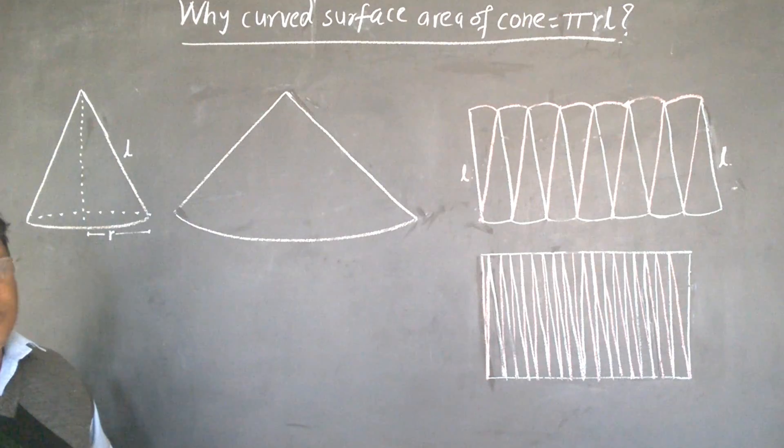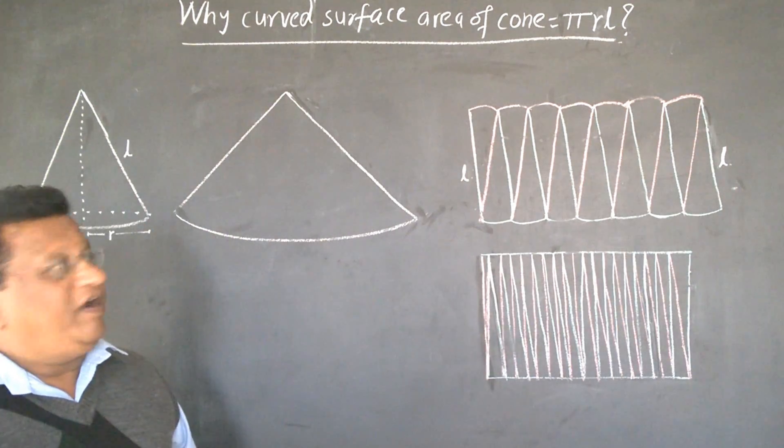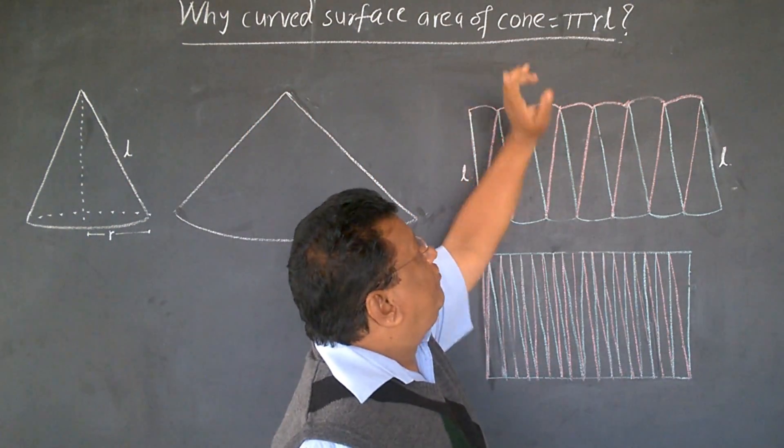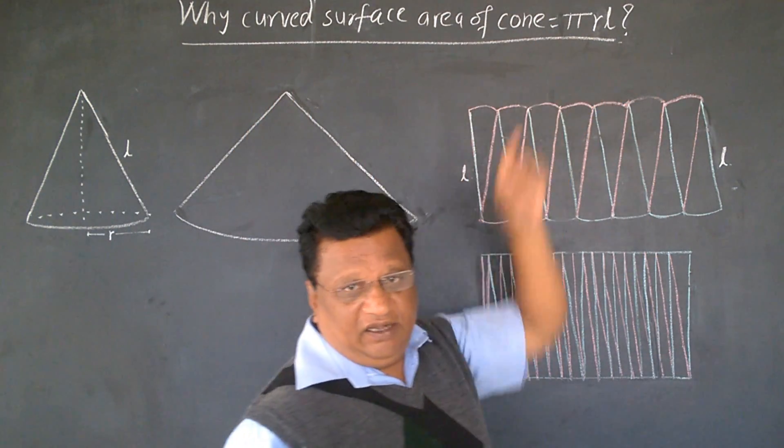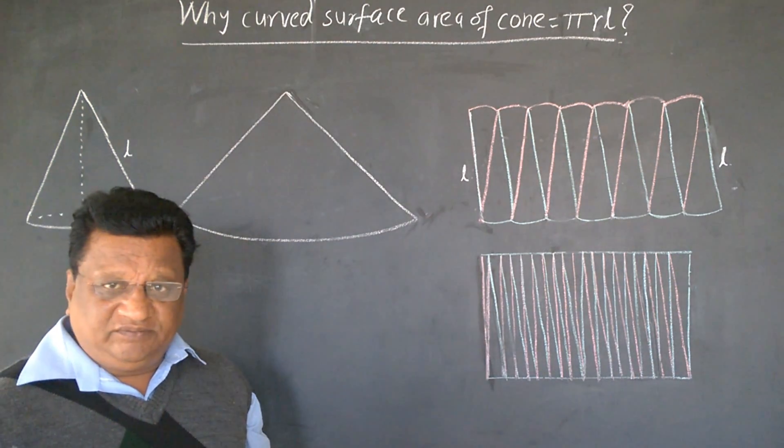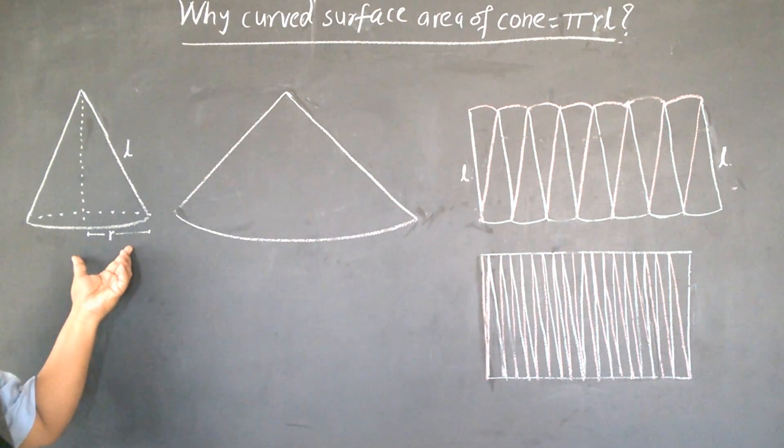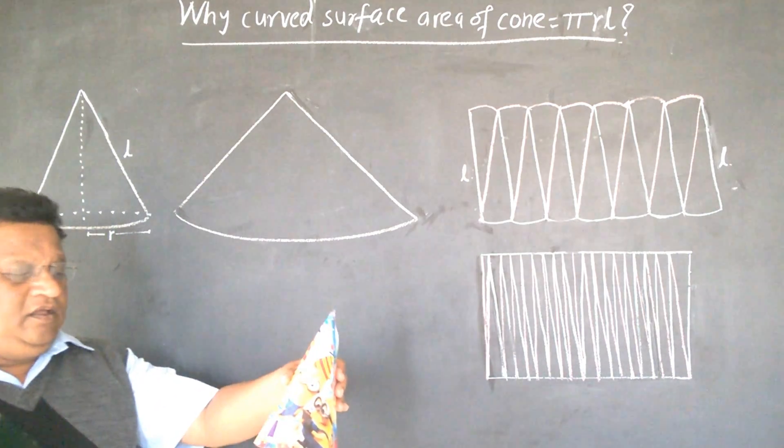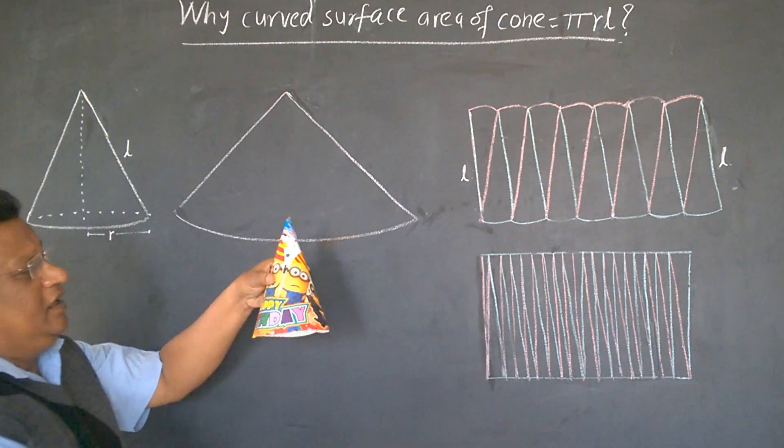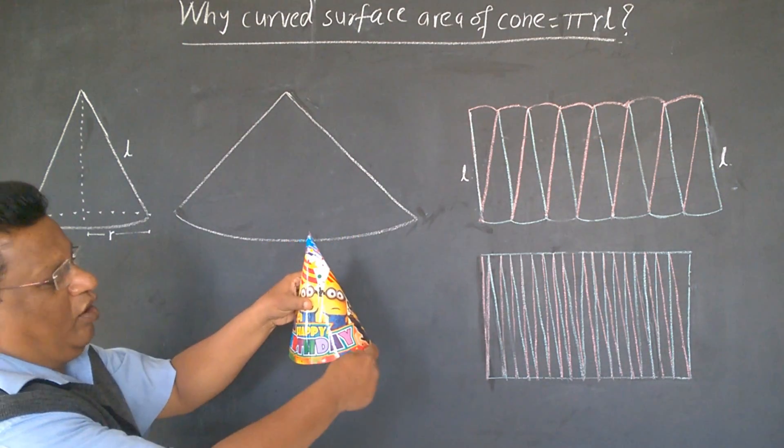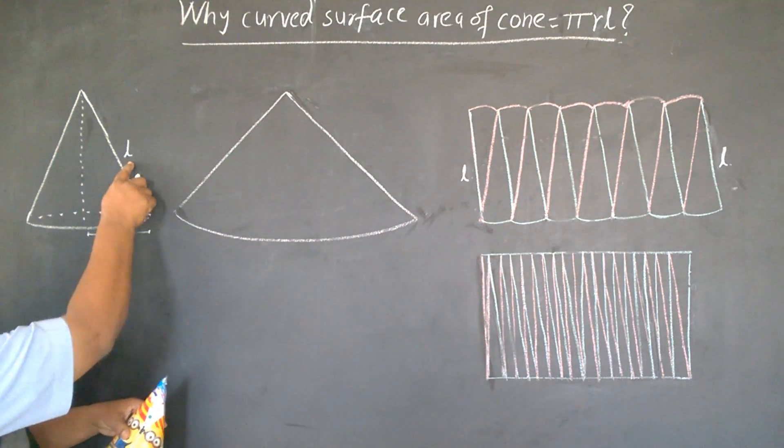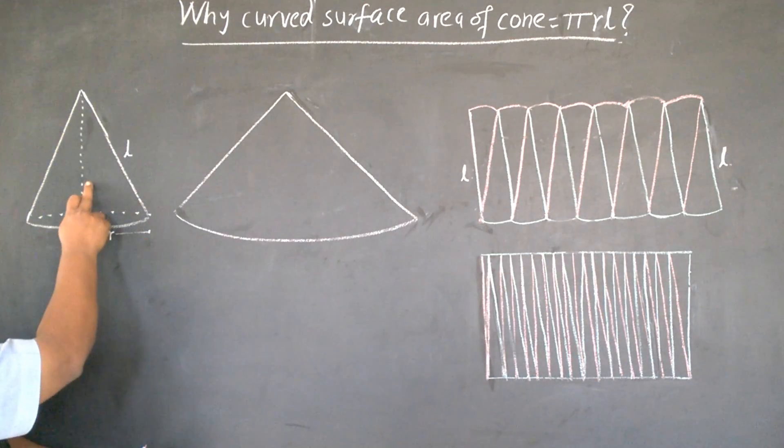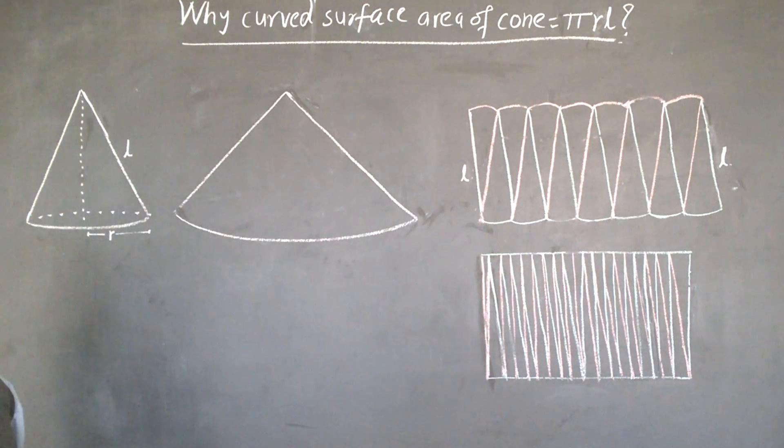Hi friends, today we are going to find the formula for curved surface area of cone, which is pi r l. Why is pi r l? Let's consider a cone. In case of cone, this is the slant height of the cone, that is denoted by l. And radius of cone r, h is its vertical height.